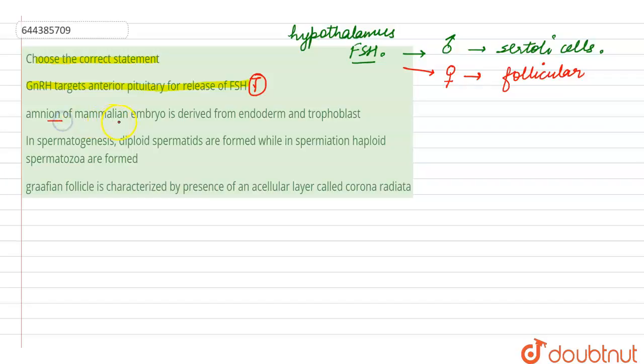The second statement says that the amnion of the mammalian embryo is derived from the endoderm and trophoblast. Amnion is a type of extra-embryonic layer, along with chorion, allantois and the yolk sac. Amnion is composed of trophoblast on the inside and somatopleuric extra-embryonic mesoderm on the outside. It is filled with a clear watery fluid secreted by both the embryo and the membrane, which prevents desiccation of the embryo and acts as a protective cushion.